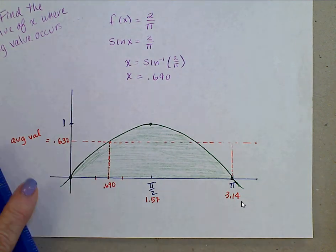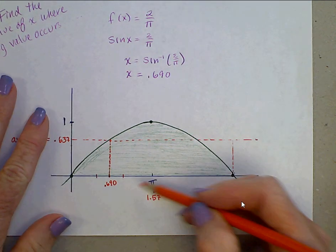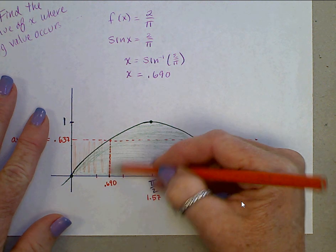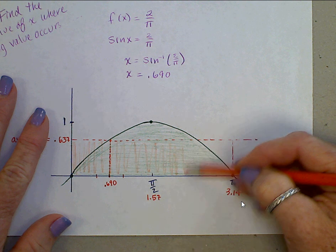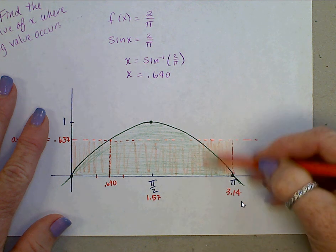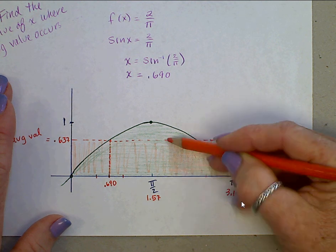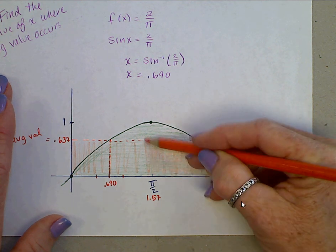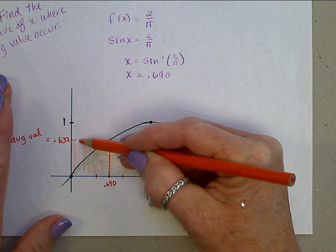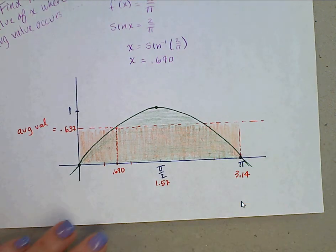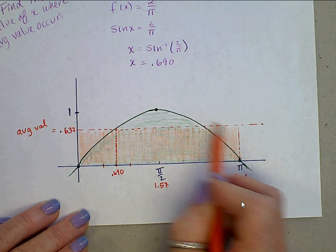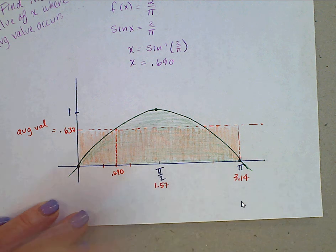And if you look, the area underneath this rectangle from 0 to pi with a height 0.637, the area under that rectangle is exactly the same as the area underneath y equals sine x from 0 to pi. And it absolutely looks like that. This piece right here and this piece over here could fill in this bit up there.